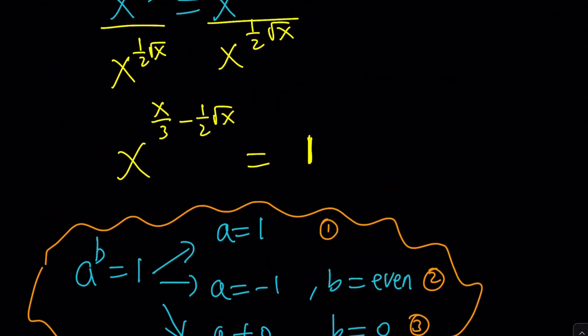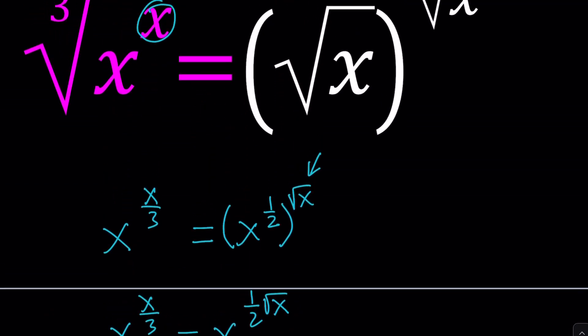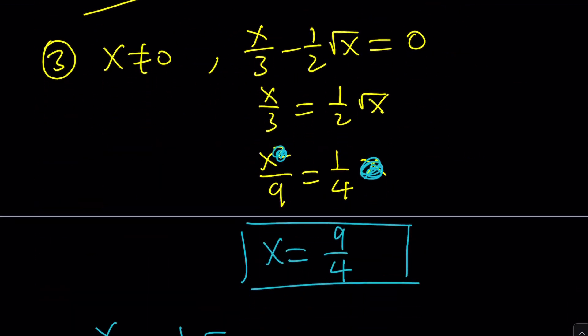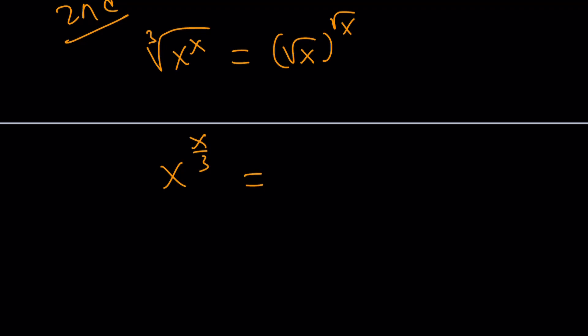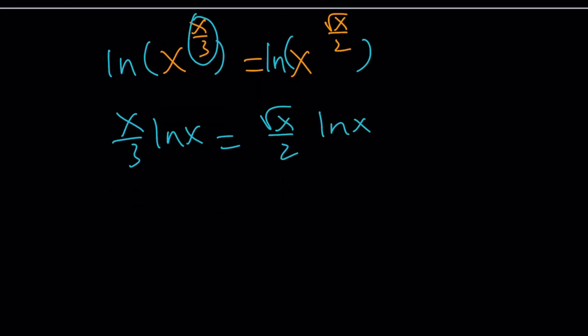Those are pretty much the cases that we need to check. Are there any other solutions? I don't think so. But if you wanted to look at an alternative approach here, you could probably just go with ln. Let me quickly show you what you can do with that. After writing it as x to the power x over 3, and x to the power square root of x over 2, you can basically ln both sides, and then use the power rule, bring this to the front, x over 3 ln x equals square root of x over 2 ln x. Then put it together, and then you can kind of factor out an ln x, so it's going to look like this. x over 3 minus square root of x over 2, all multiplied by ln x equals 0.